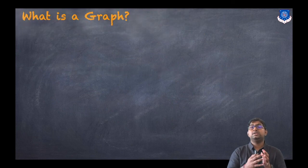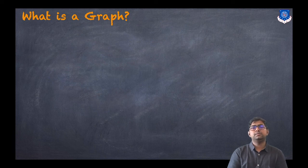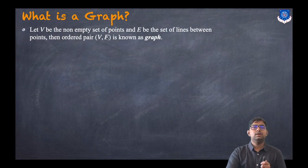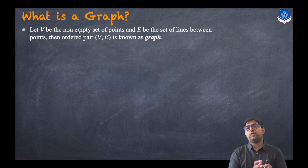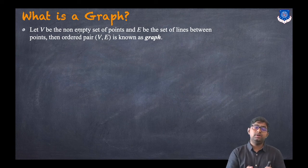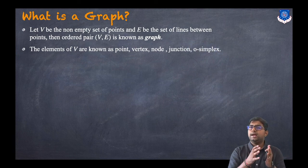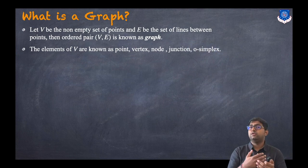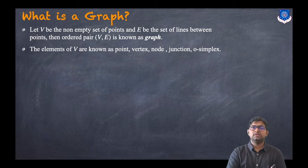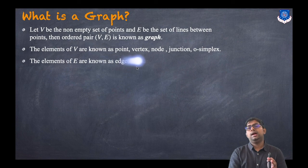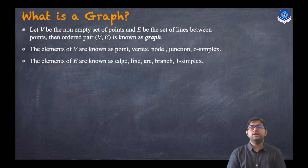Let us discuss what is a graph. Let capital V be the non-empty set of points, and let capital E be the set of lines between points. Then this ordered pair (V, E) is known as a graph. The elements of set V are known as points, vertex, node, junction, or zero simplex.